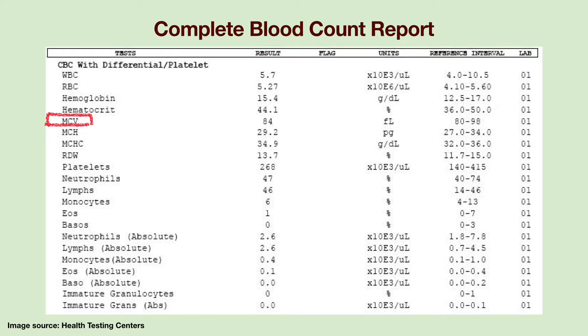Red blood cells contain a special protein called hemoglobin which makes the blood look red. Hemoglobin helps carry oxygen from the lungs to all over the body.